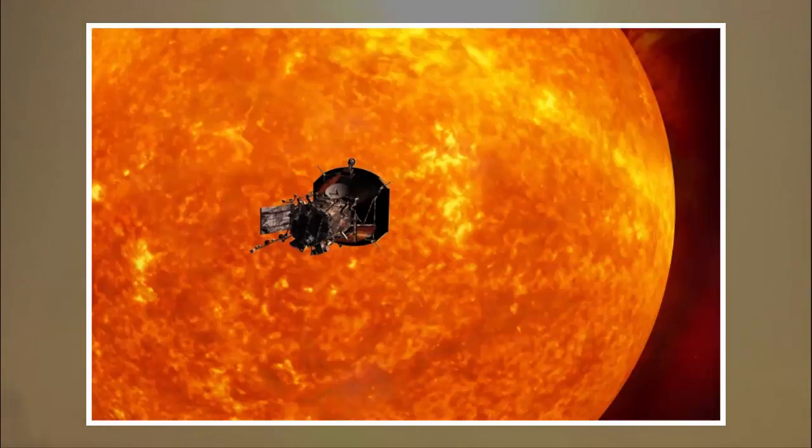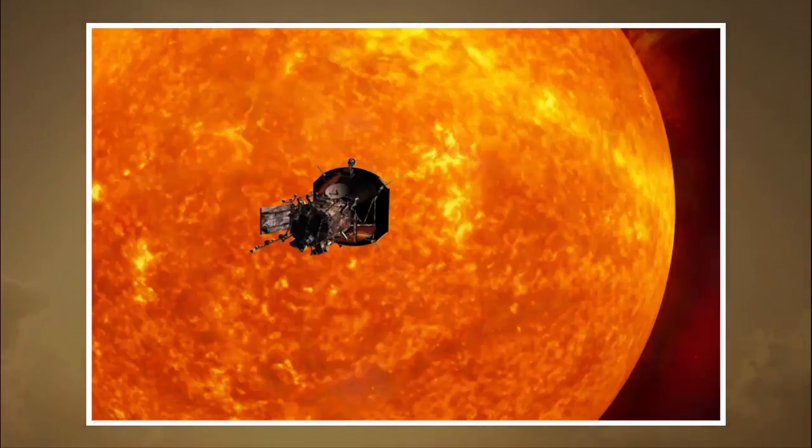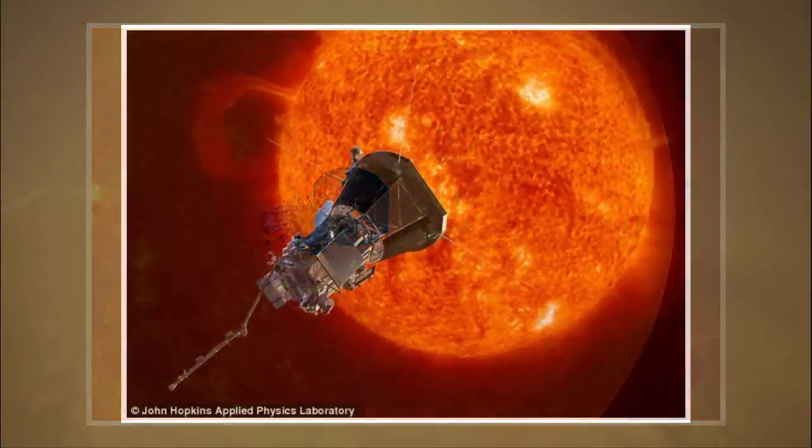The spacecraft will swoop within 4 million miles of the sun's surface next year, facing extremes in heat and radiation. This will bring it seven times closer to the sun's surface than any spacecraft before it.